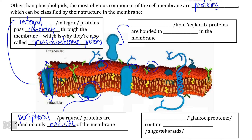If we look at this particular peripheral protein, we see that it isn't actually embedded within the cell membrane at all. This is what we call a lipid-anchored protein, meaning that instead of being embedded within the phospholipid bilayer, it's actually covalently bonded to some sort of lipid found in the membrane — it could be a phospholipid or a cholesterol molecule, depending on the function of this protein.